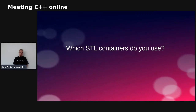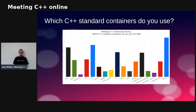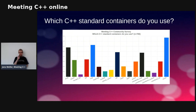I also figured out I could ask which STL containers you use. It's not surprising that most folks use vector — I hope everyone uses vector in one way or another. I put span in here to get some numbers on it and people seem to use spans. There are some people using forward_list, and a lot of other containers in use as well.